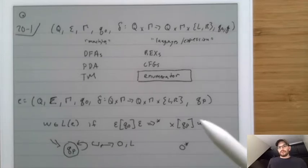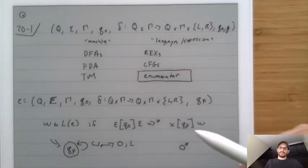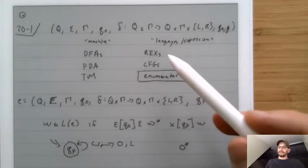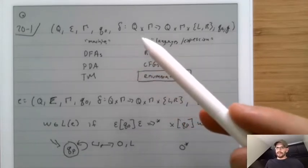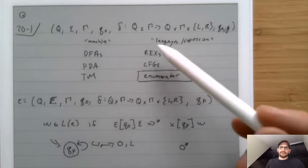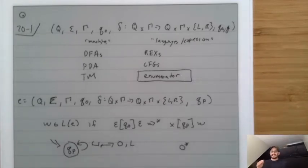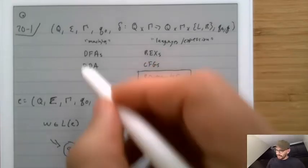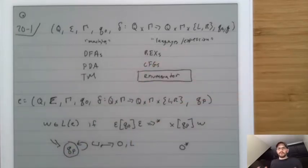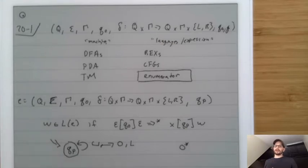Regular expressions are a really convenient way to think about regular languages — people often think primarily about regular languages via regular expressions and don't really think about DFAs. Similarly, people primarily care about context-free grammars more than PDAs. Turing machines though — no one really cares about enumerators. They're useful to fill out the symmetry of the diagram, but they don't really speak to us. We don't really think about programs as working this way, though certainly some programs turn on and produce data — that's kind of what an enumerator is.